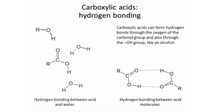When carboxylic acids are dissolved in water, the acid molecule is also able to form multiple hydrogen bonds with the water molecules — for instance, between the carbonyl oxygen and a hydrogen, and between the hydrogen of the OH group and the oxygen of the water. So each carboxylic acid is able to form quite a few hydrogen bonds with surrounding water molecules.